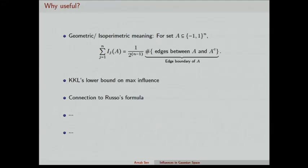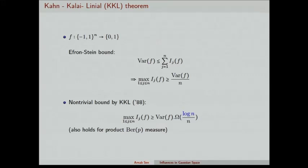Why is influence theory useful? There are many reasons — let me give you a few. First, it is very natural: if you take a subset of the hypercube and look at the sum of the influences, this is just the normalized edge boundary of the set, so it has a nice isoperimetric interpretation. The next two things are the KKL lower bound on the influence and Russo's lemma, which I will talk about next.